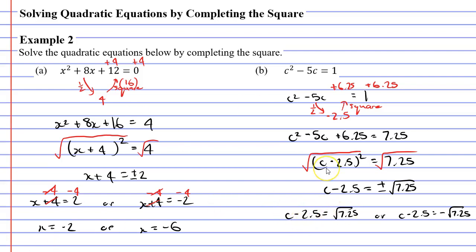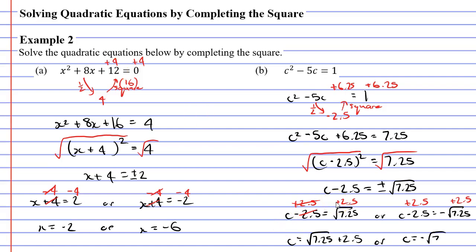So I'm going to write my two solutions down separately. I've got c minus 2.5 is equal to positive square root of 7.25, or c minus 2.5 is equal to negative square root of 7.25. The square root of 7.25 is a really nasty decimal, so I'm just going to keep it as the square root of 7.25 — these are called exact solutions because I haven't rounded anything. Adding 2.5 to both sides, c equals the square root of 7.25 plus 2.5. For the other solution, c equals negative square root of 7.25 plus 2.5. So these are our two solutions for question B.